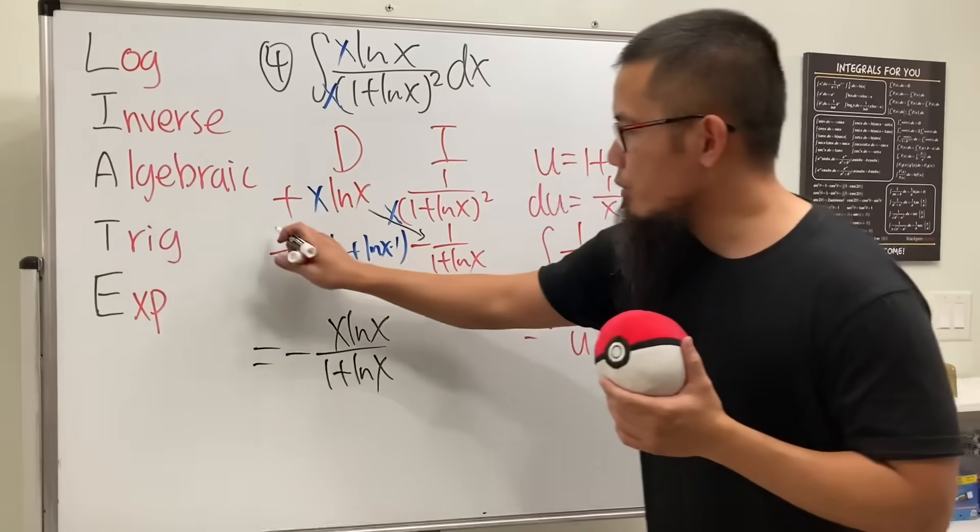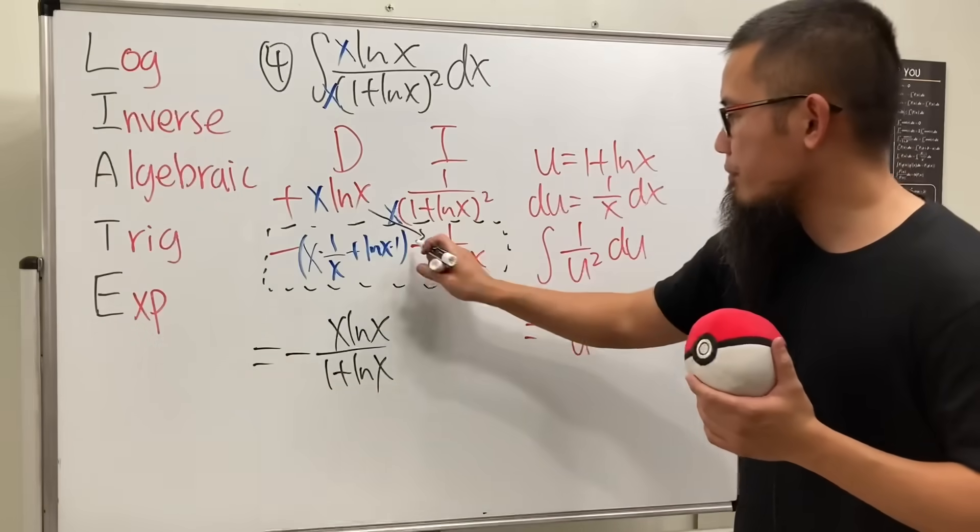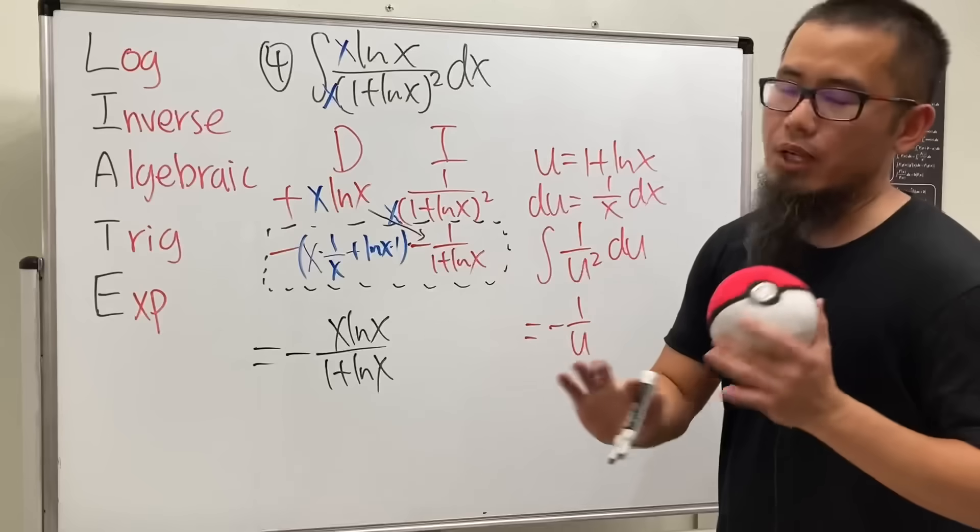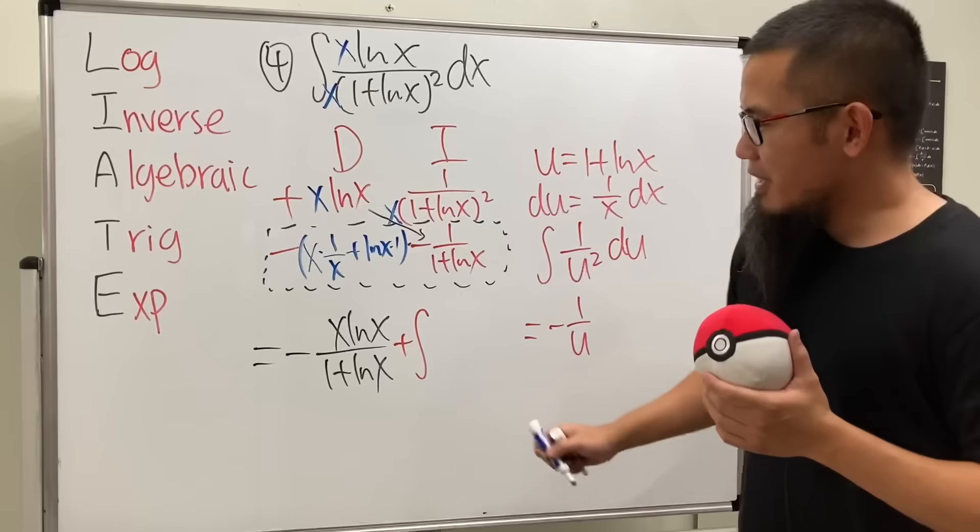And we are going to be multiplying these two things together. But check this out. Negative times negative is positive. I know, I know. But let me just say that. Plus the integral.